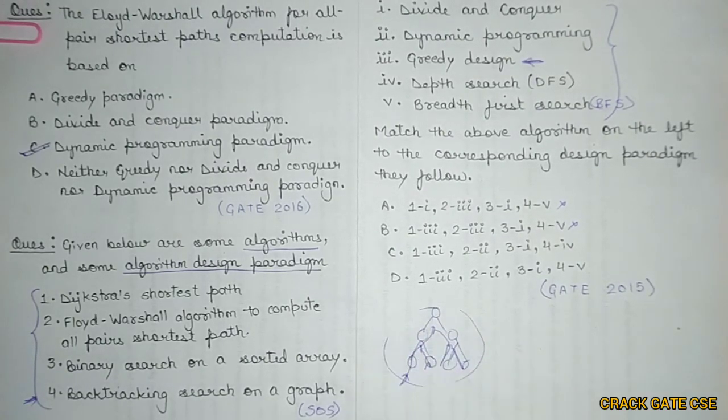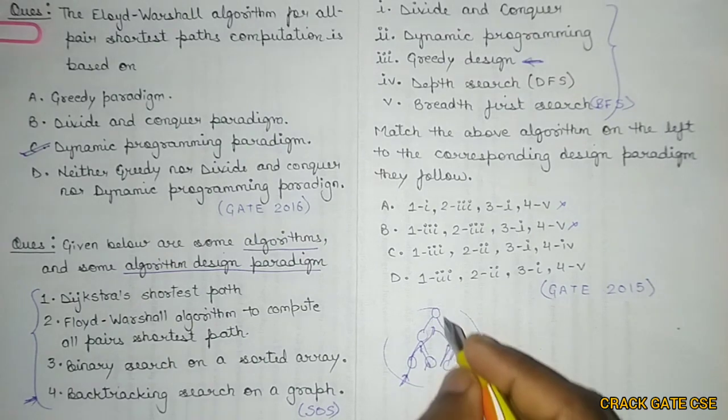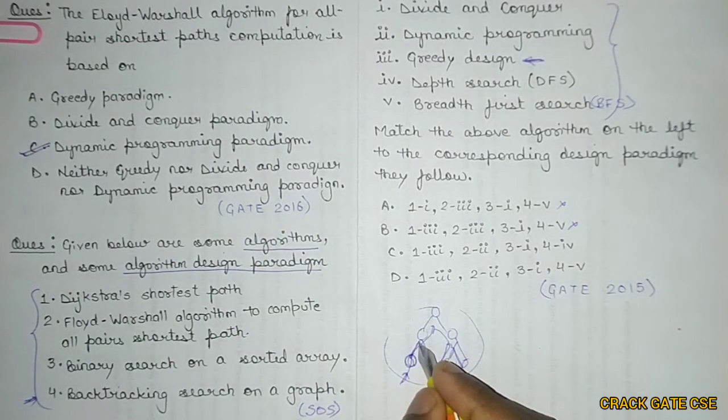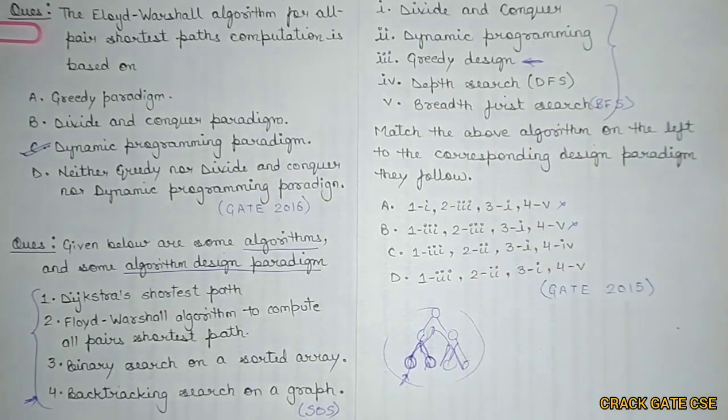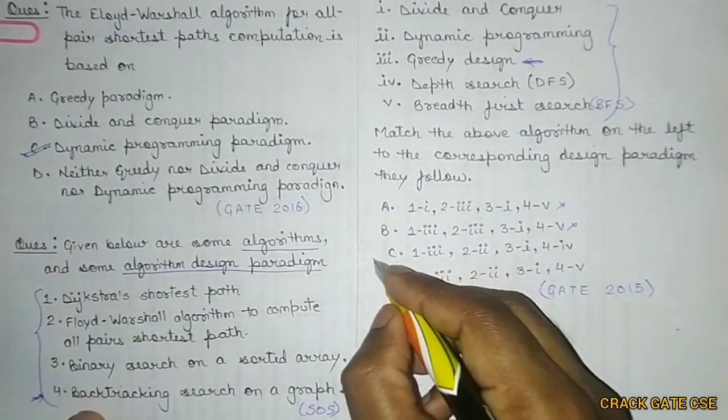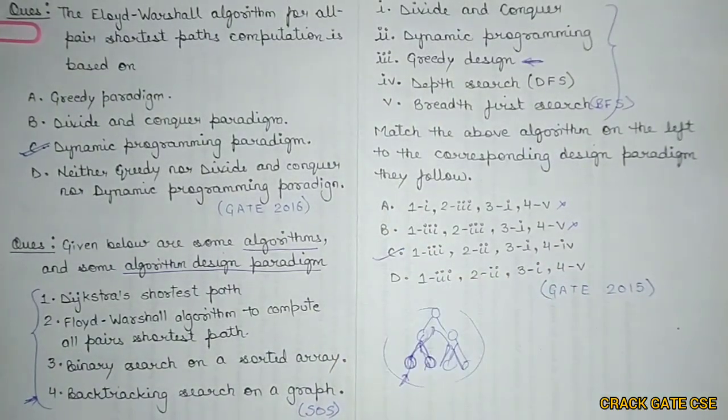So this is a kind of backtracking approach. Here you can see that I'm going to the depth first, then going back, then again going to depth, then going back. So this is a depth-first search approach. So this fourth one is related to the fourth one. The right answer is C, not D.